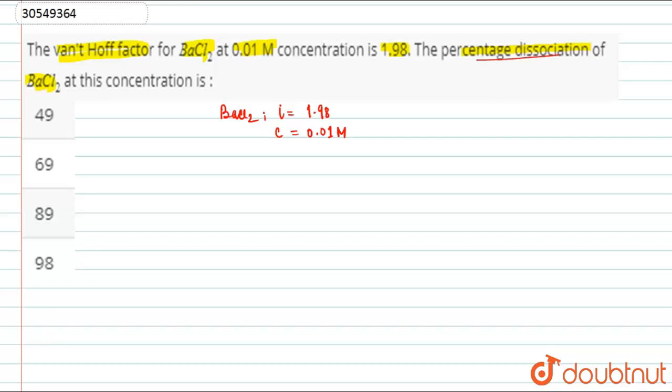Here we have a percentage of alpha. We know that alpha is equal to i minus 1 over n minus 1, where i is our Van't Hoff factor and n is our number of ions.